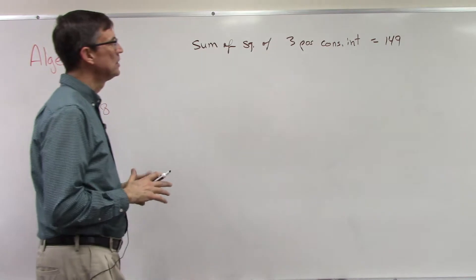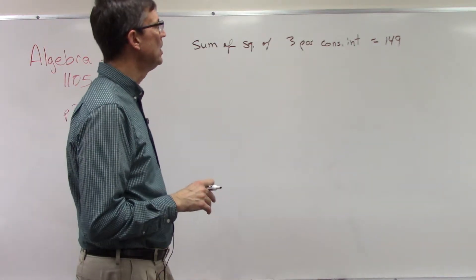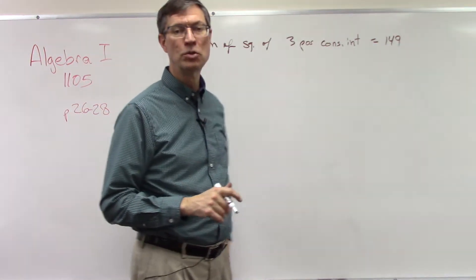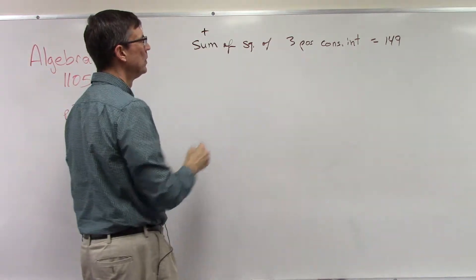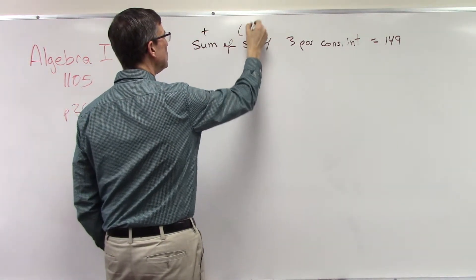Let's take this problem: The sum of the squares of three positive consecutive integers is 149. Sum means I'm going to add them all up. Square means I'm going to raise it to the second power.